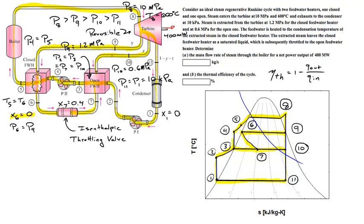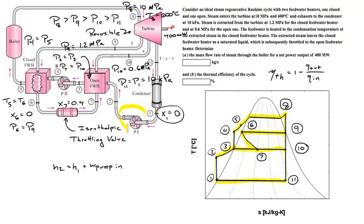To start solving this problem: the liquid is a saturated liquid leaving the condenser and we know its pressure, so we know H1. We want to get from H1 to H2 across the pump. We do an energy balance around the pump: H2 equals H1 plus the work of the pump in. You'll need to do energy balances and mass balances around almost all of these components to figure out what you know and what you're looking for.